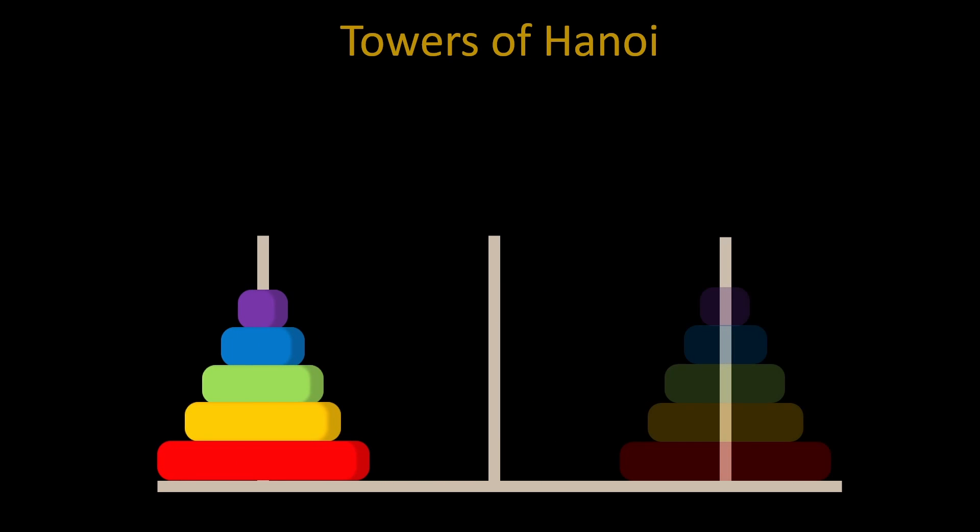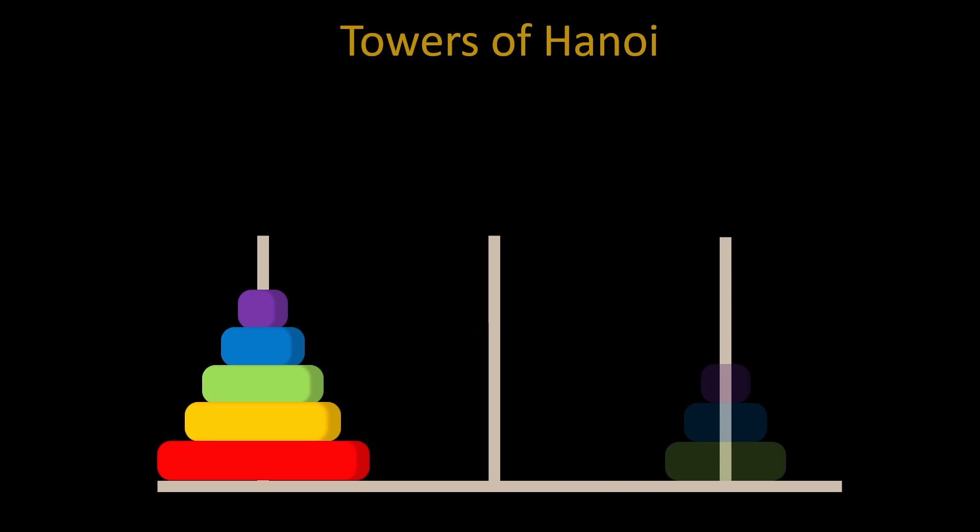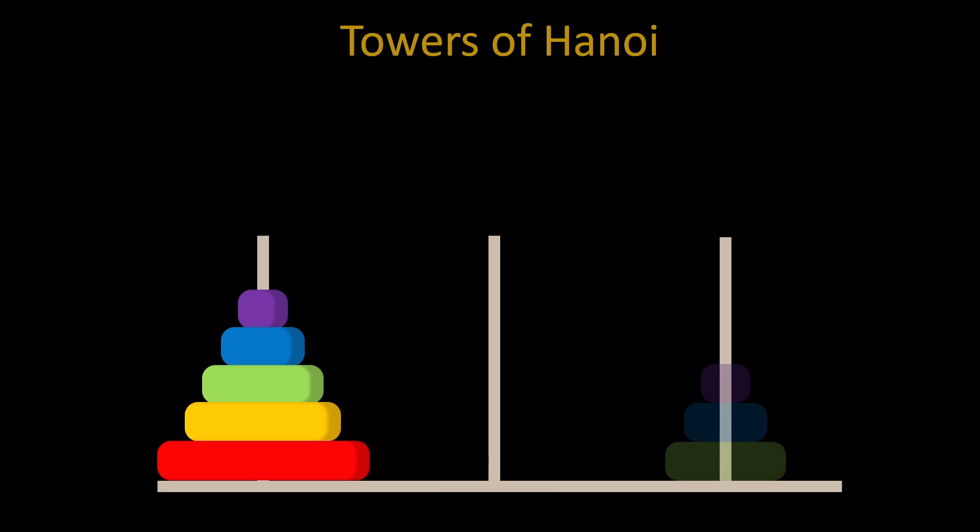If we want all five discs here, we know that we first need the top four discs here. But to do that, we need the top three discs here, which means we need the top two discs here. And at this point, I think you see the pattern.